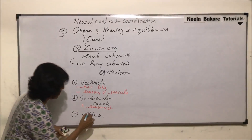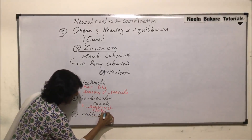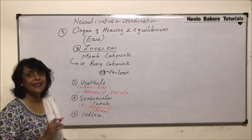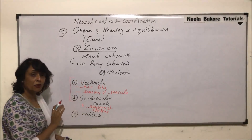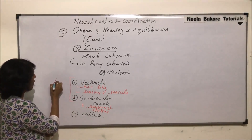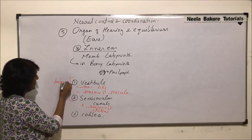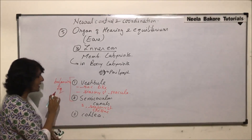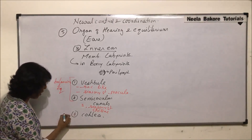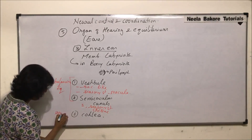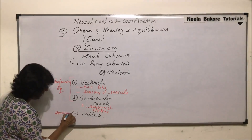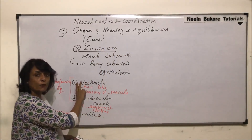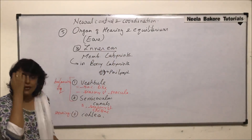The semicircular canals each have sensory structures known as crista. The cochlea is the part responsible for hearing. So out of all three parts, two are responsible for balancing and equilibrium — the crista and macula help in balancing posture and equilibrium — whereas the cochlea helps us in hearing. Our ears are the organs of hearing and equilibrium: two parts are for equilibrium and cochlea is for hearing.